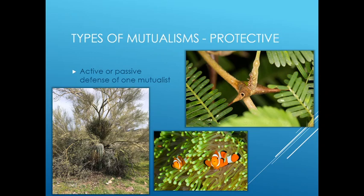Another type of mutualism is protective — where one player actively or passively defends the other. The bullhorn acacia has these big thorns that ants chew into to make their colonies, housing their eggs and larvae. Those ants protect the plant by not allowing other insect herbivores on it — if a caterpillar is found they attack and kill it — they can bite mammal herbivores, and they even clear the space around the acacia so it gets the most sun. The clownfish and sea anemone is another example — the anemone protects Nemo, but Nemo also protects the anemone from fish that might try to eat it, and also provides nutrients through waste.